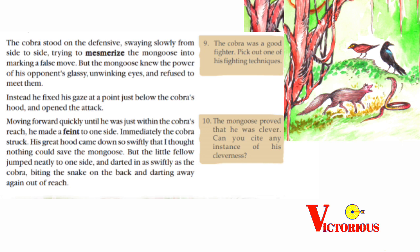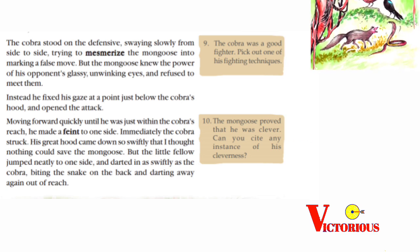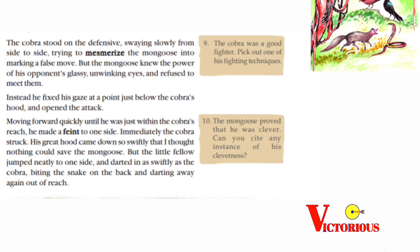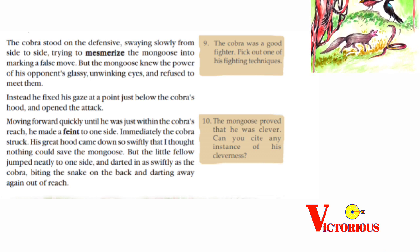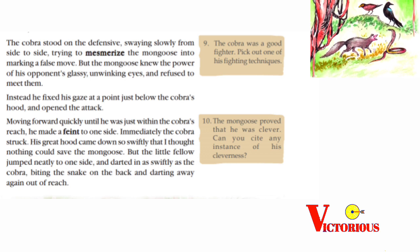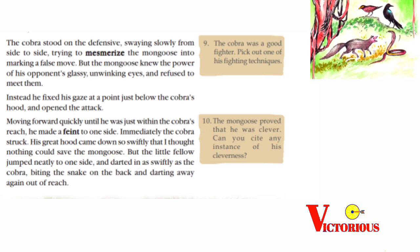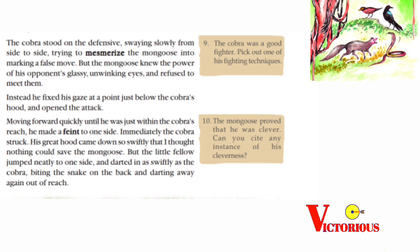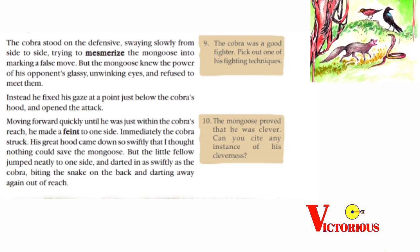The ninth question is waiting for you: the cobra was a good fighter — pick out one of his fighting techniques. The cobra tried to mesmerize the mongoose into making a false move. That's the right answer.